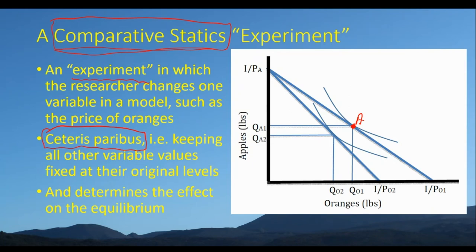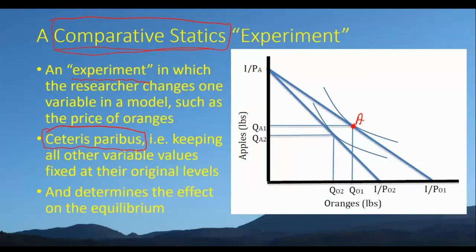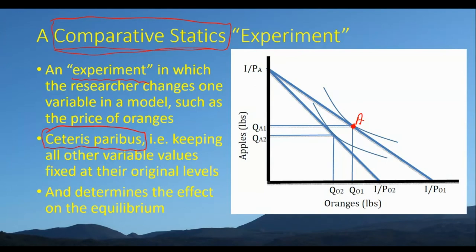You've got to think within the context of the models when answering questions. In the real world, if the price of oranges increases, income might simultaneously rise and the price of apples might also change. If you change everything at once, the answer is that anything can happen — lots of different outcomes are possible. We don't get a clear cause-and-effect relationship that way. So we do it methodically: change one variable, see how it affects others. We can then change PO, PA, or income I — each ceteris paribus.